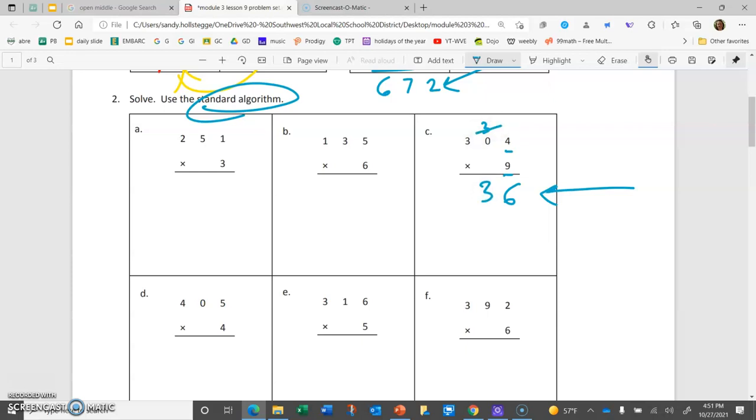And now, I'll do 9 times my 3 hundreds. 9 times 3 is 27. I'm going to write down the 7. And, I'll try to carry that 2 over to the thousands place. But, since we don't have any thousands, that 2 is just going to fall down into the thousands place.